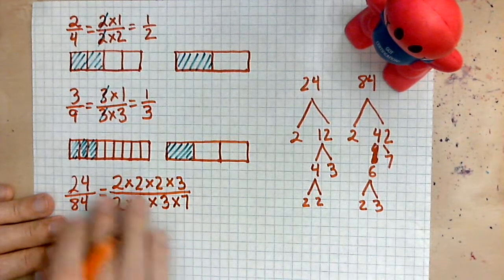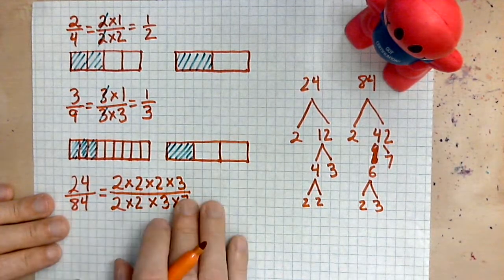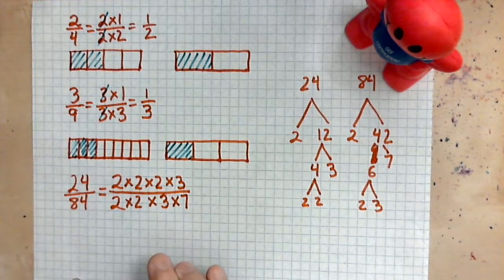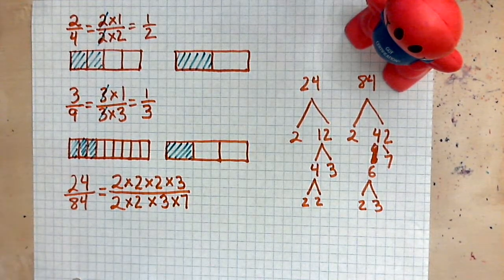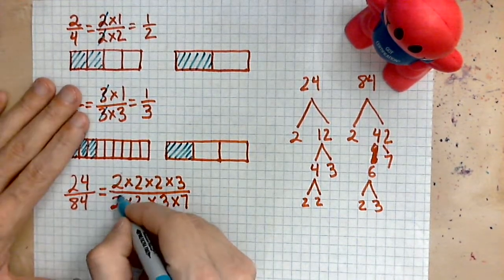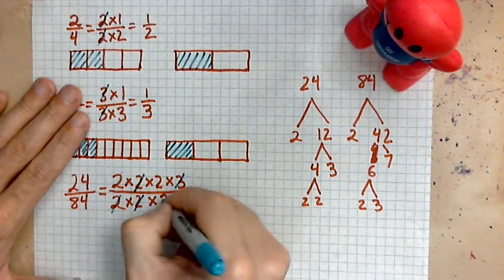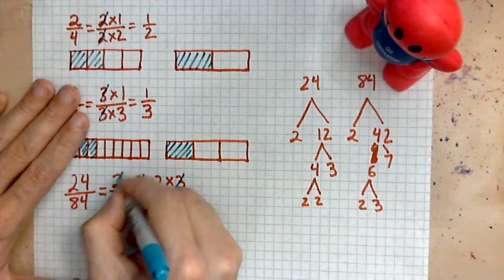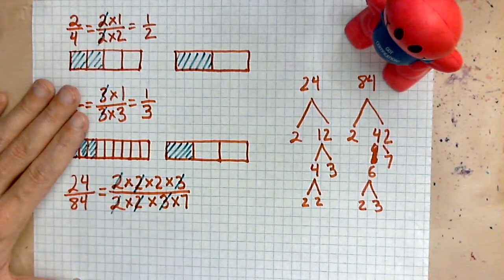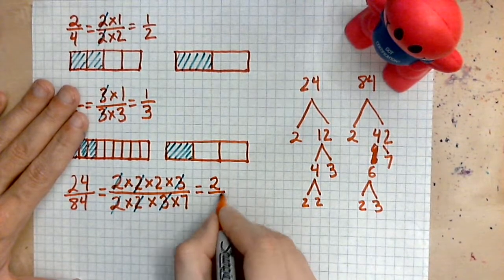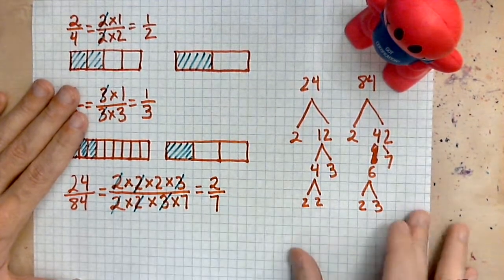So by factoring the numbers, we see what the common factors are very readily. And now we can simply cross things off. 1 by 1 by 1. Cross, cross, cross off, cross off. Cross off the 3 and the 3. And you can tell from this calculation, all that remains is 2 over 7. You see?